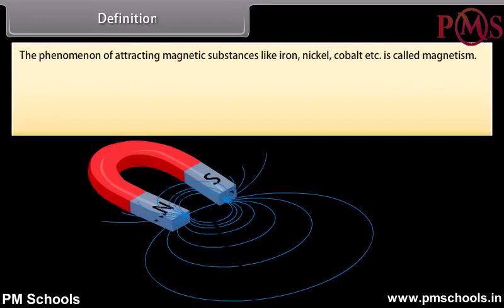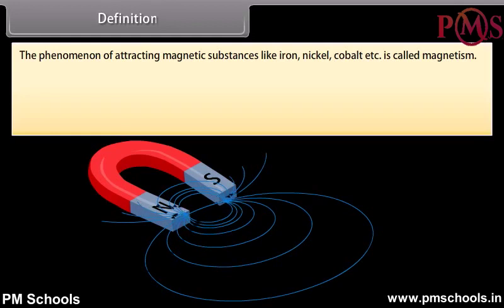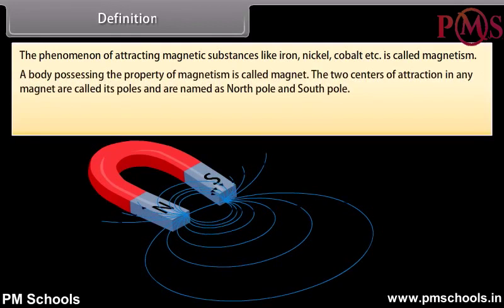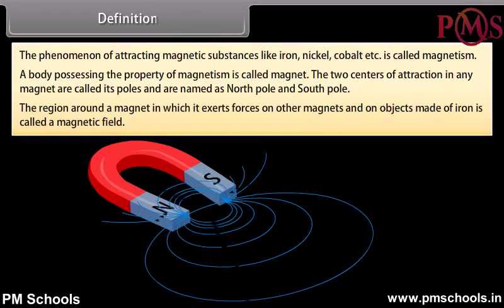Definition: The phenomenon of attracting magnetic substances like iron, nickel, cobalt, etc. is called magnetism. A body possessing the property of magnetism is called a magnet. The two centers of attraction in any magnet are called its poles, and are named as north pole and south pole. The region around a magnet in which it exerts forces on other magnets and on objects made of iron is called a magnetic field.